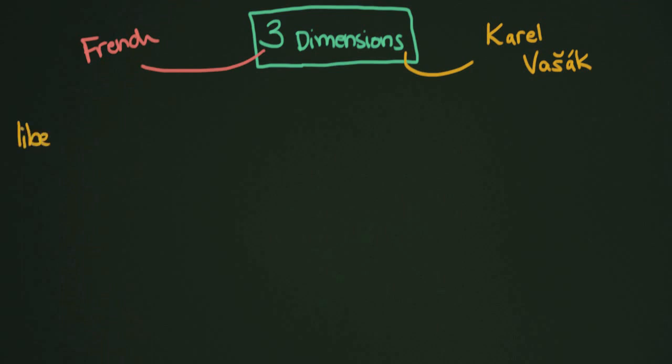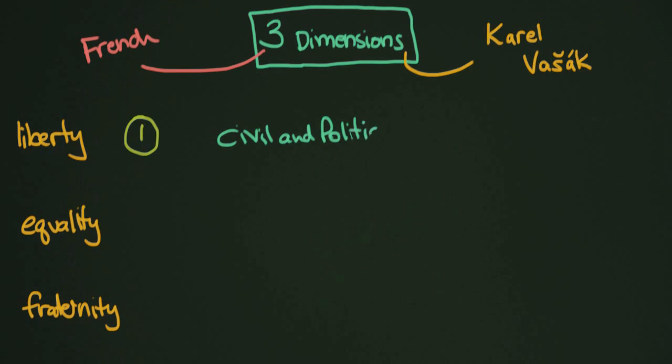The French Revolution had the motto of liberty, equality, and fraternity, and this is a simple way of remembering the three dimensions. The first dimension is civil and political rights, the second dimension is economic, social, and cultural, and the third dimension is collective rights.